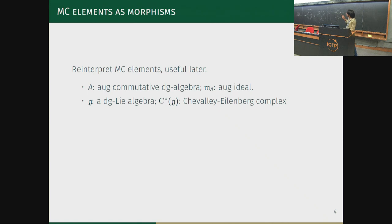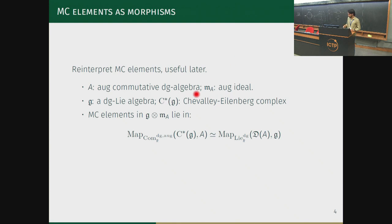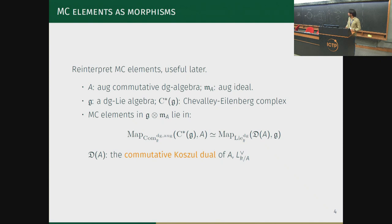A is an augmented commutative dg algebra and m_A is the augmentation ideal, i.e., the kernel of the map from A to k. g is a dg Lie algebra and C*(g) is the Chevalier-Eilenberg complex, which computes the Lie algebra homology of g. Then Maurer-Cartan elements in g ⊗ m_A are the same as maps of augmented commutative dg algebras from C*(g) to A, which by adjunction is the same as maps of dg Lie algebras from DA to g, where DA is the commutative cosimplicial dual—the tangent complex of A.